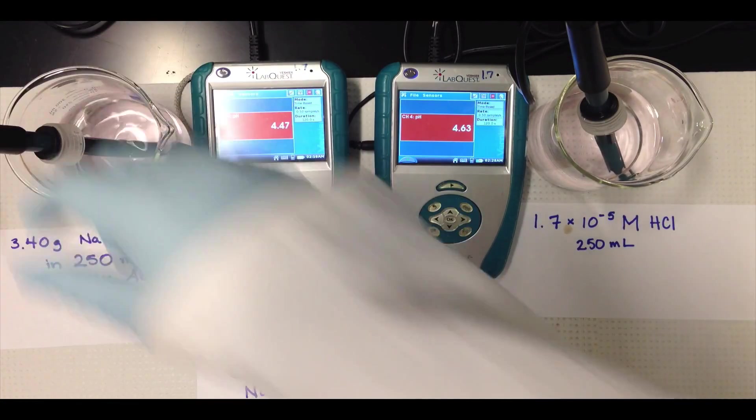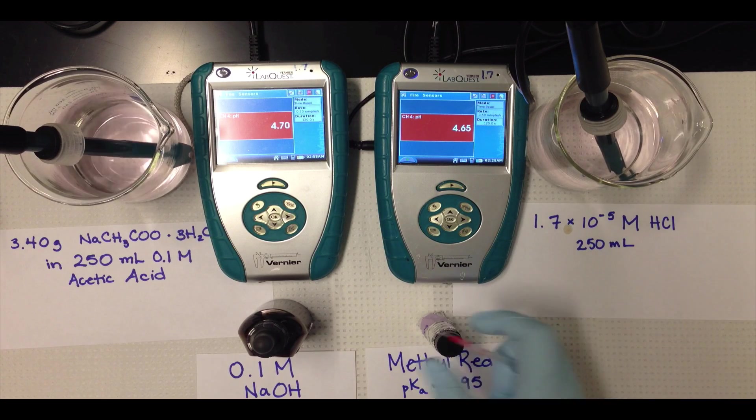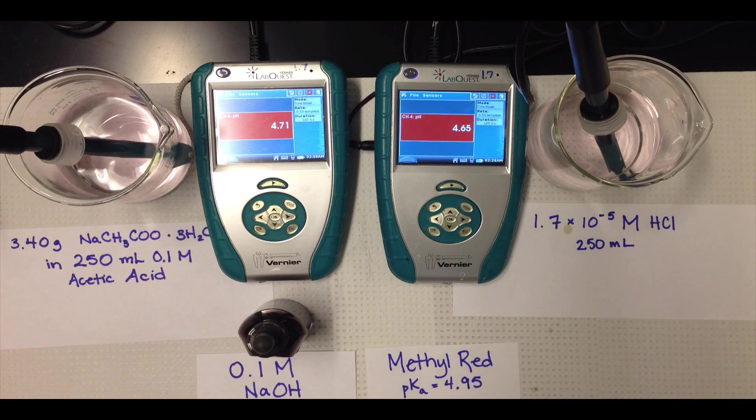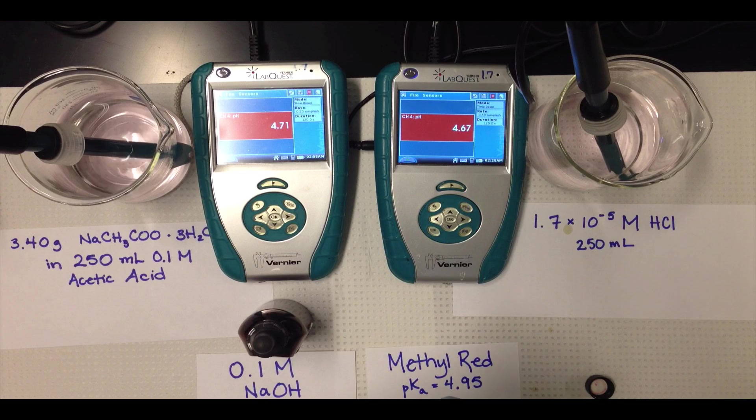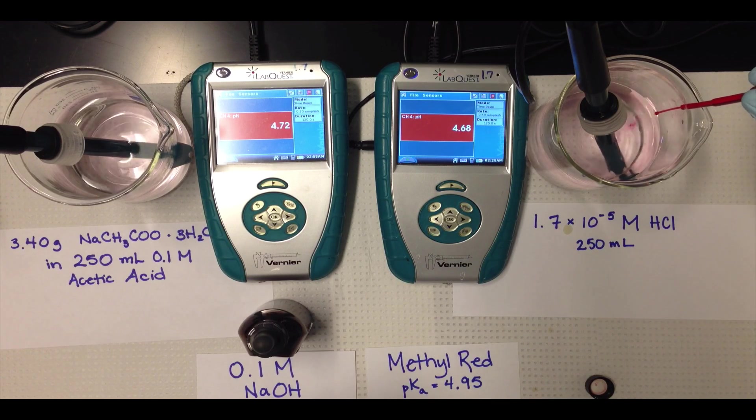We also have 0.1 molar sodium hydroxide solution as well as methyl red indicator, which is going to show us visually what happens to the pH as we add strong base. So we'll add methyl red indicator to both of these solutions and stir a little bit to give the solutions some color.